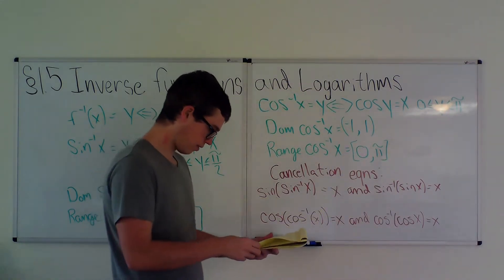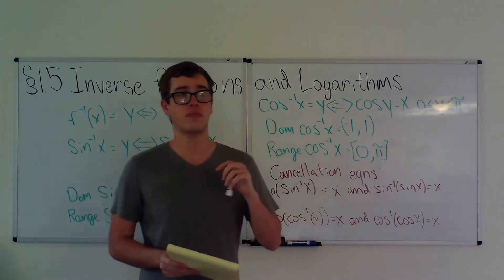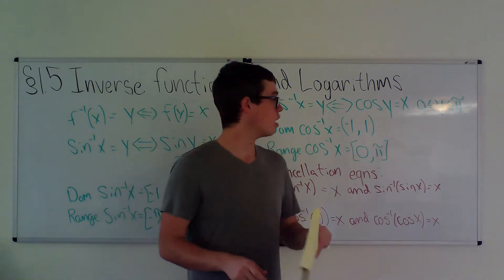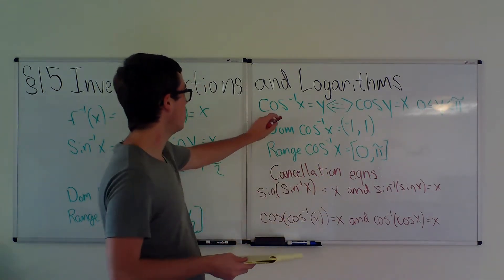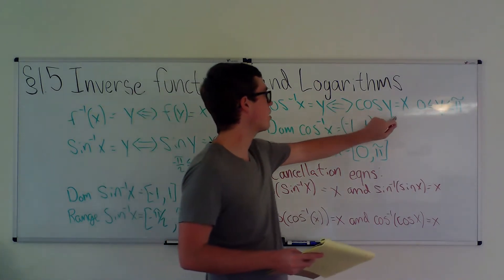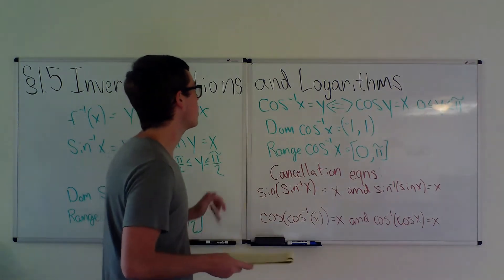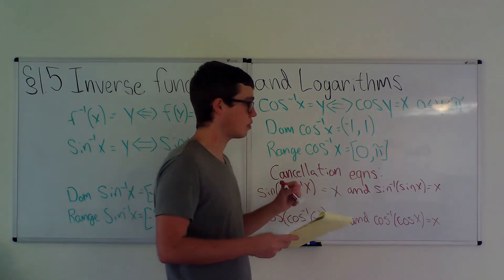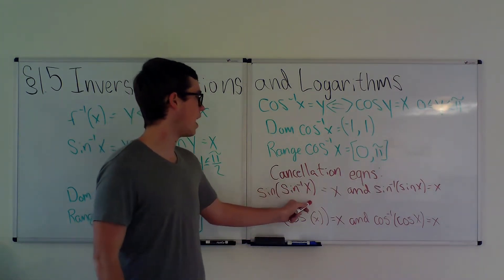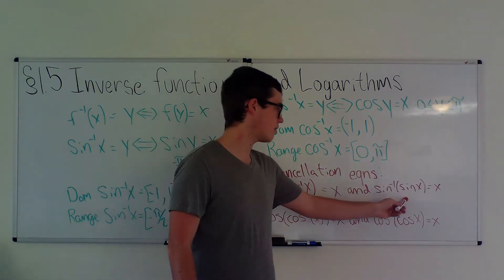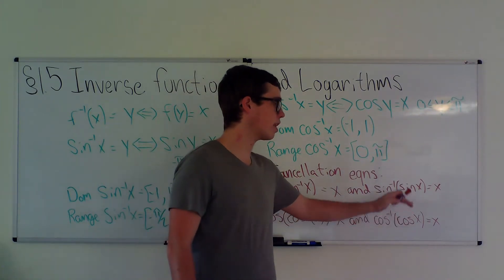For arccosine, we restrict the domain of cosine to [0, π] so it passes the horizontal line test. cos⁻¹(x) = y if and only if cos(y) = x, where 0 ≤ y ≤ π. The domain of cos⁻¹(x) is [−1, 1] and the range is [0, π]. Cancellation equations: sin(sin⁻¹(x)) = x, sin⁻¹(sin(x)) = x, cos(cos⁻¹(x)) = x, and cos⁻¹(cos(x)) = x.